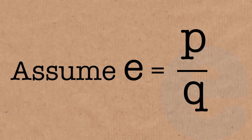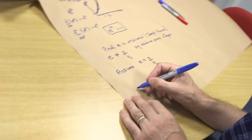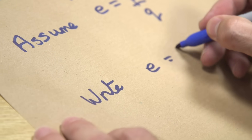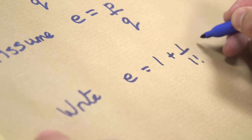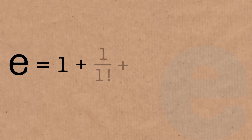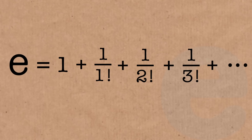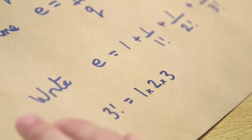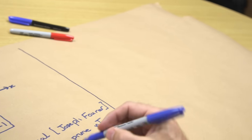So you assume that e can be represented as the ratio of two integers. And the one thing I'm hoping you'll allow me to write down is that e has an infinite series expansion. We can write e as 1 plus 1 over 1 factorial, plus 1 over 2 factorial, plus 1 over 3 factorial, and it goes on and on. This is common knowledge — you do this at school. Three factorial, just to remind everyone, is 1 times 2 times 3. Now let me call this equation one, and I'll call this equation two.